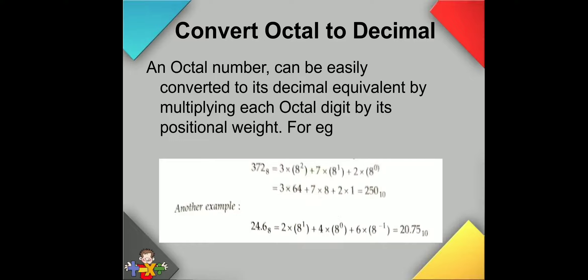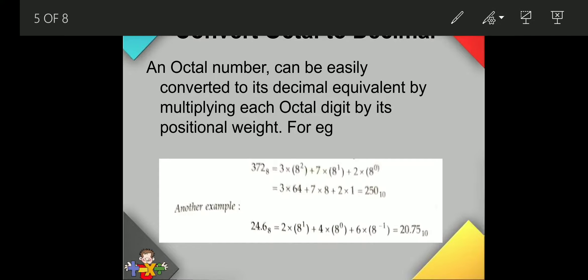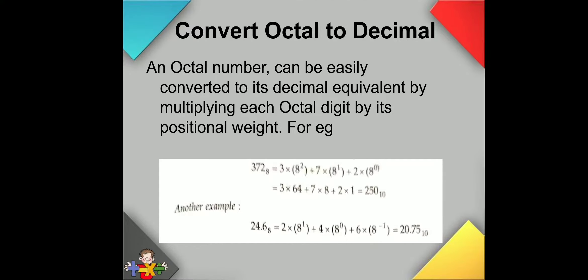The next example is 24.6 to the base 8. We start from the rightmost digit. For any digit after the decimal point, we multiply by negative powers of 8, starting at minus 1. So 6 into 8 to the power minus 1, because it is after the decimal point. Then 4 into 8 to the power 0, and 2 into 8 to the power 1. We evaluate and add to get the decimal equivalent.